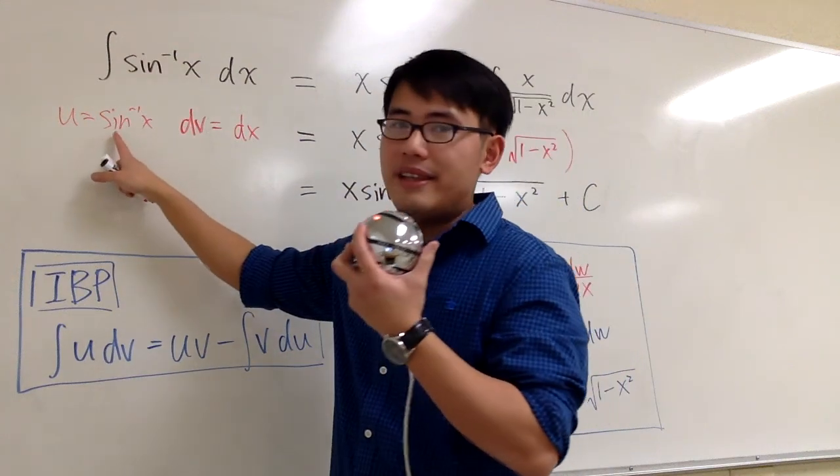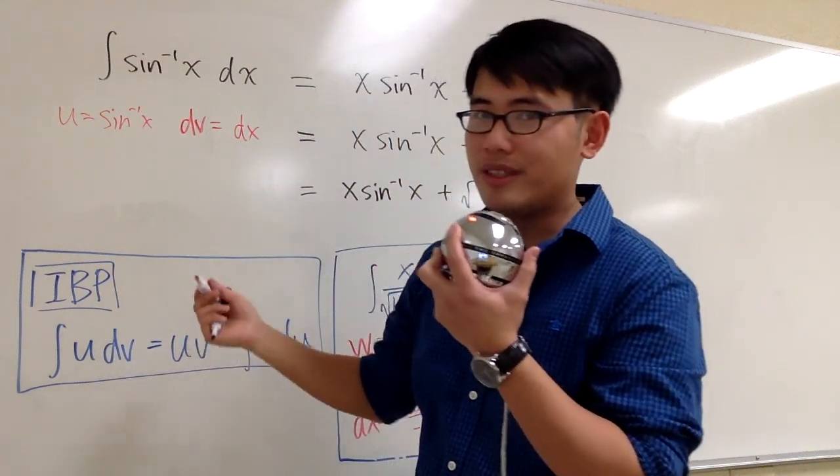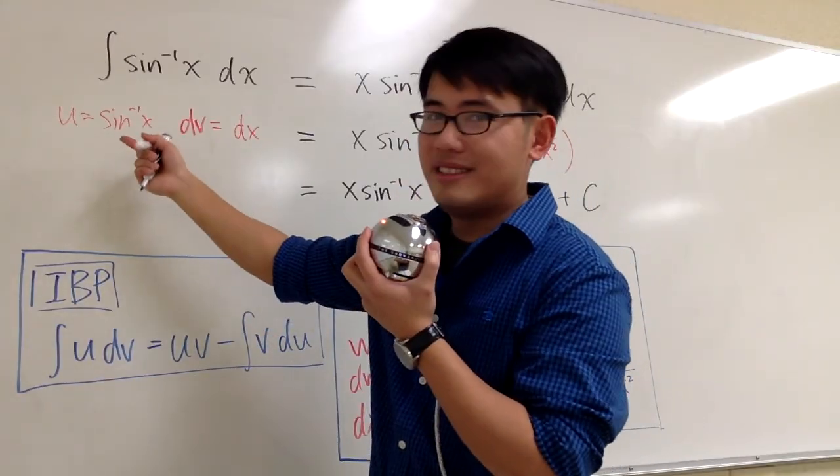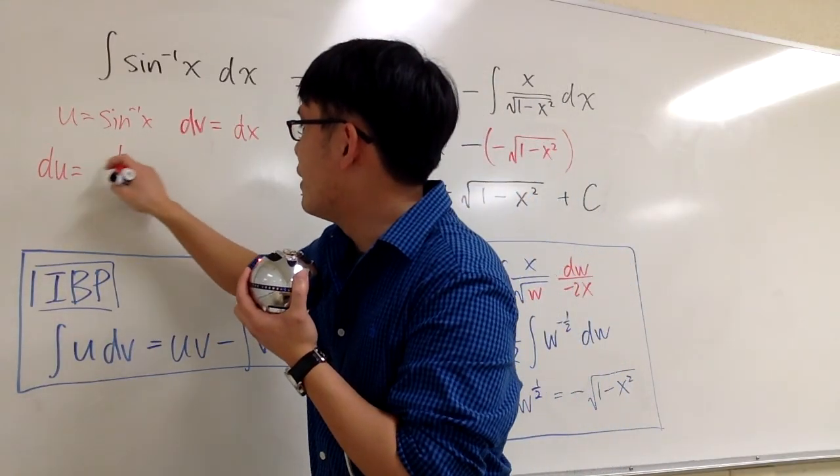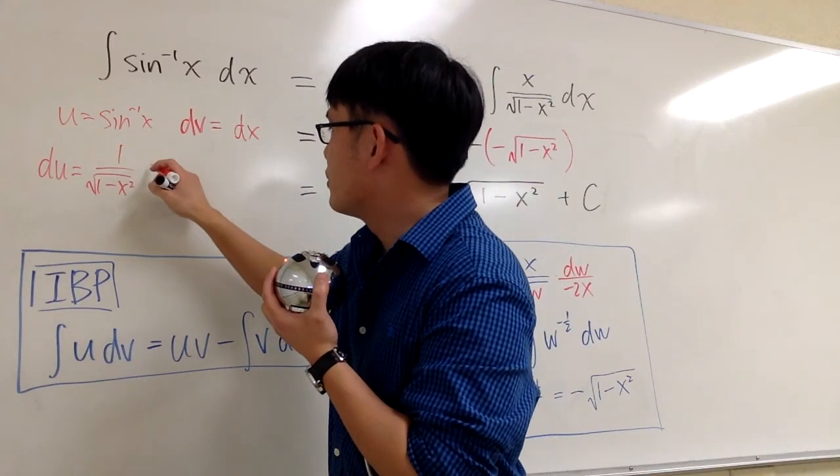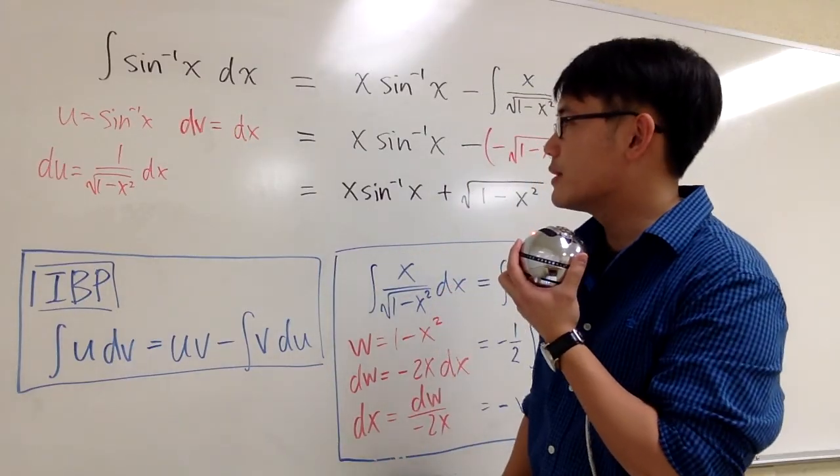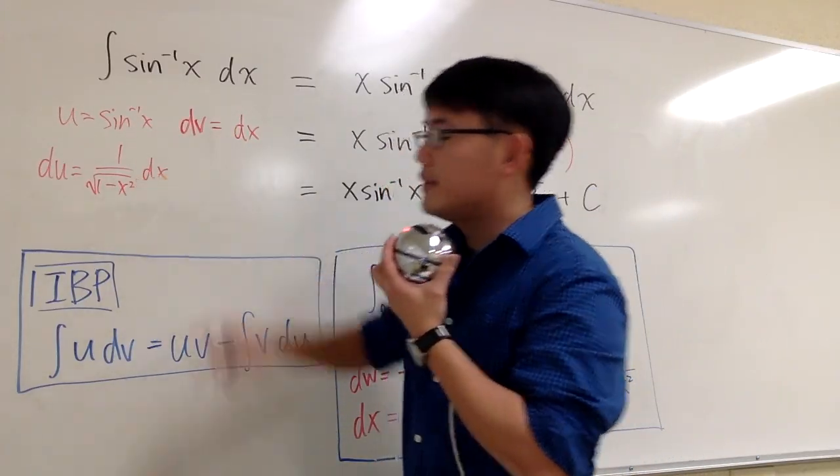How can we differentiate inverse sine x? You should remember the derivative table really well. So what's the derivative of inverse sine x? You should tell me this is 1 over square root of 1 minus x squared. But we are talking about differential. Let's put the dx on the side. So know your derivative table really well.